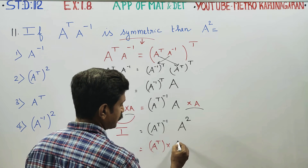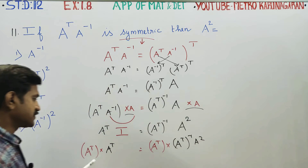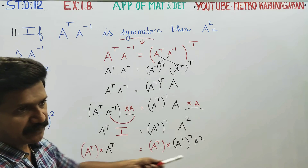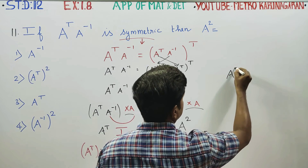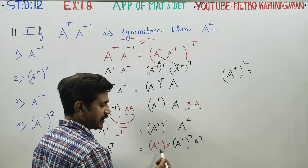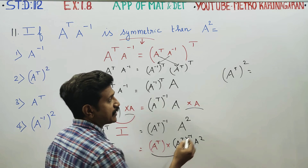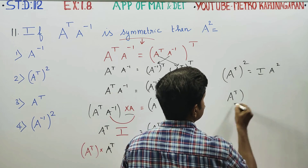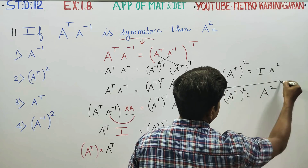This is A square. This is A transpose inverse into A square. Then the extra fitting is A transpose pre-multiply. If you do this, you will get A transpose squared. One matrix is a unit matrix — I into A square. A transpose squared is equal to A square, which is your final answer.